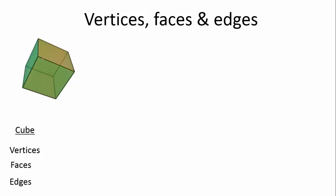For vertices: one, two, three, four on the front, and one, two, three, four on the back — there are eight vertices. How many faces? It's like a dice — it has six faces. How many edges does it have? It has twelve: one through four on top, five through eight on the sides, and nine through twelve on the bottom. These numbers are going to be very important soon.